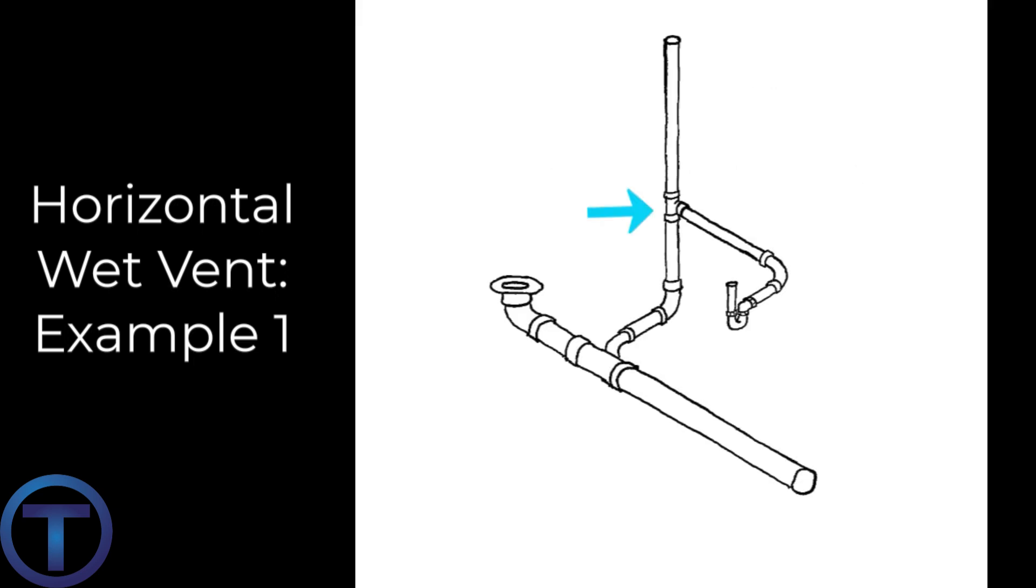Once again, the lavatory drain is being used both as a drain and a vent for the toilet. Now these are all very simple because there are only two fixtures involved. Let's look at some examples of where we have more fixtures involved and how we wet vent those. Here we have a typical bathroom group for our horizontal wet vent example two.